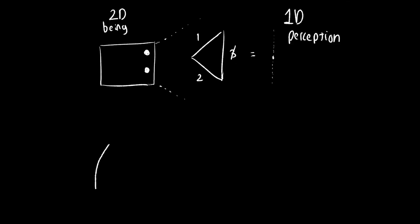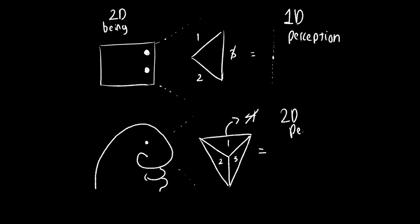Now let's consider us 3D beings in 3D worlds. When we see a pyramid, we perceive a flat image and can only see three sides of the pyramid at the same time, no matter how you spin it. We perceive depth by deforming that which is farther away is smaller and that which is closer is bigger.